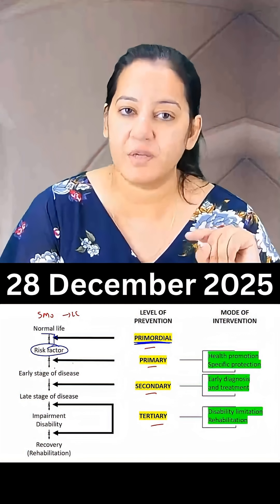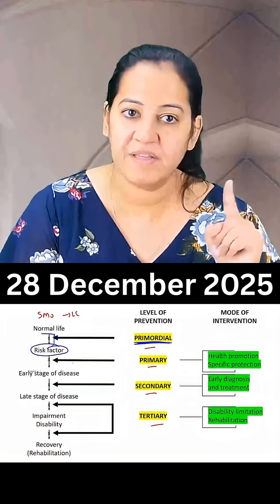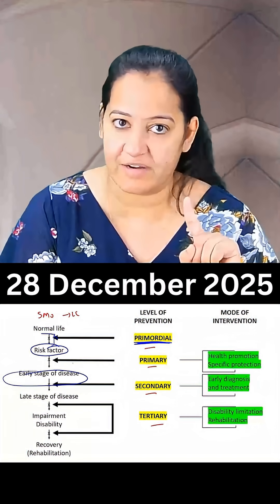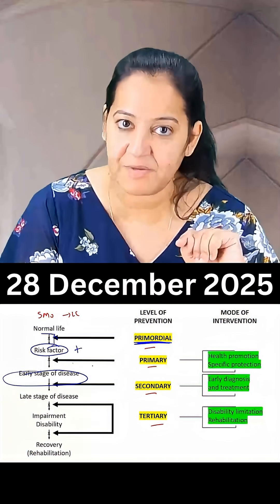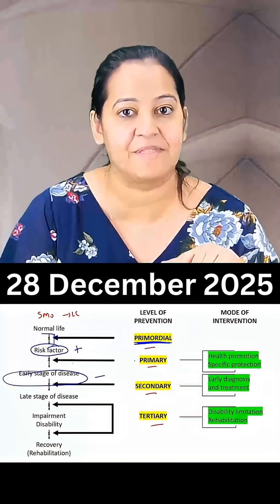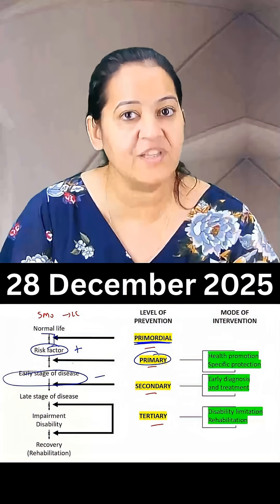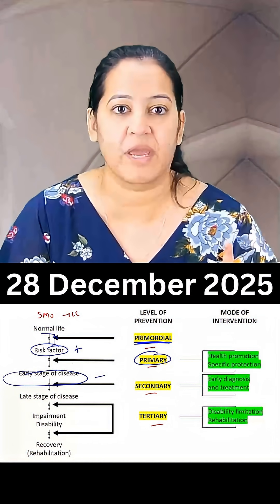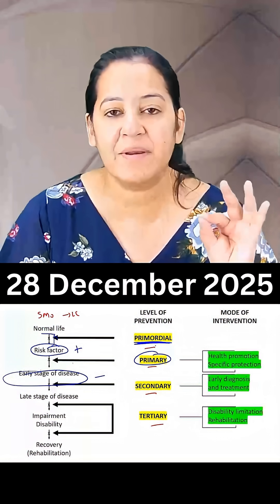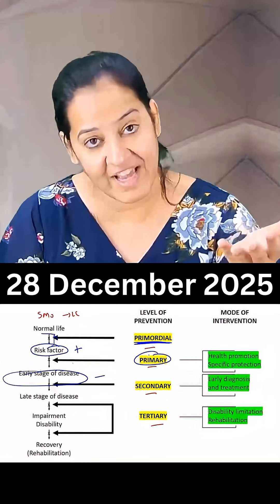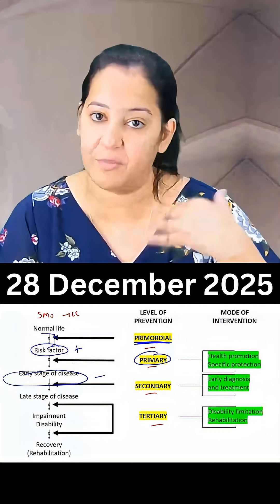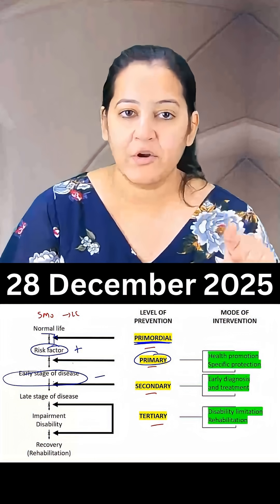Now imagine a person who smokes, but lung cancer has not yet occurred. So the risk factor is present, but the disease is absent. We are counselling the person to quit smoking. This is the primary level of prevention, where we are taking action after the risk factor but before the disease.